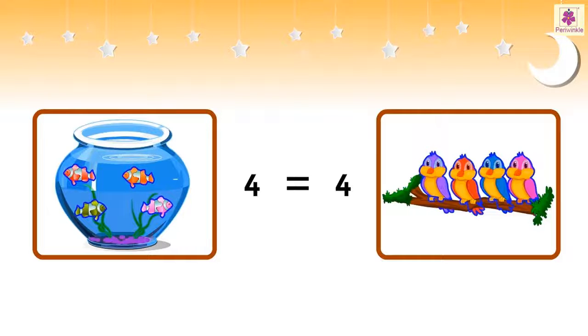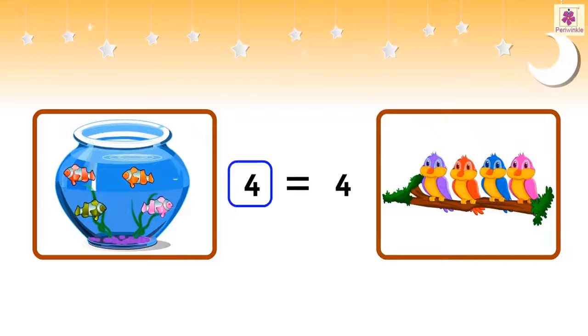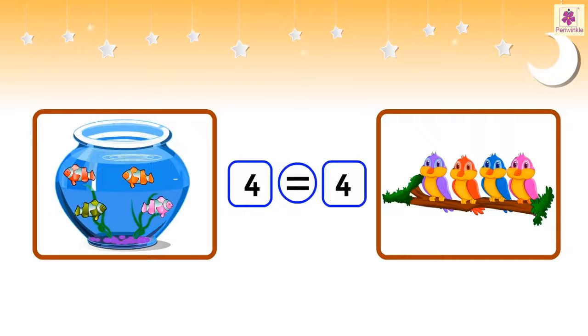So we can say that there are as many fish as birds. The number to the left of the equal to symbol is equal to the number to its right.